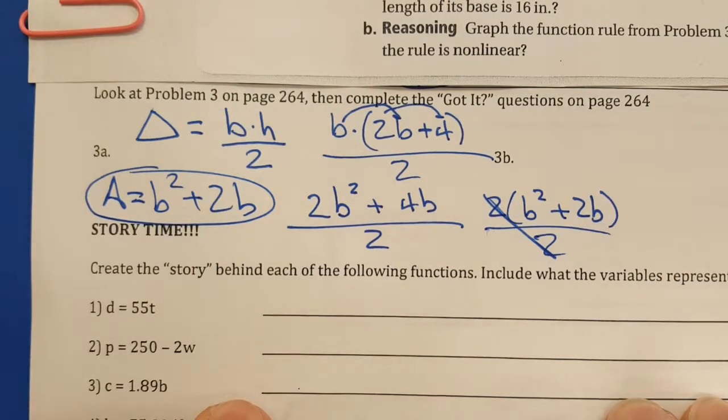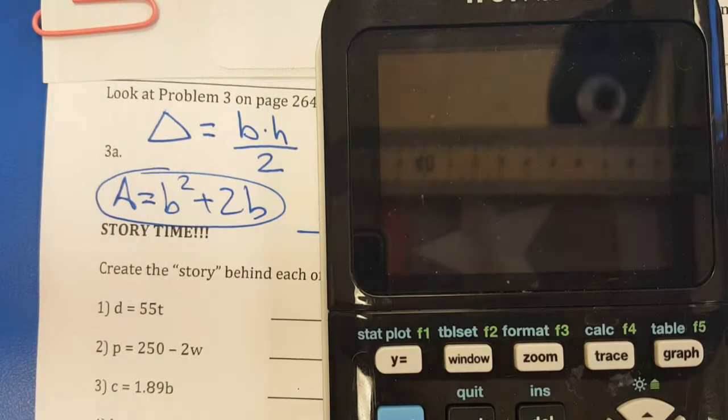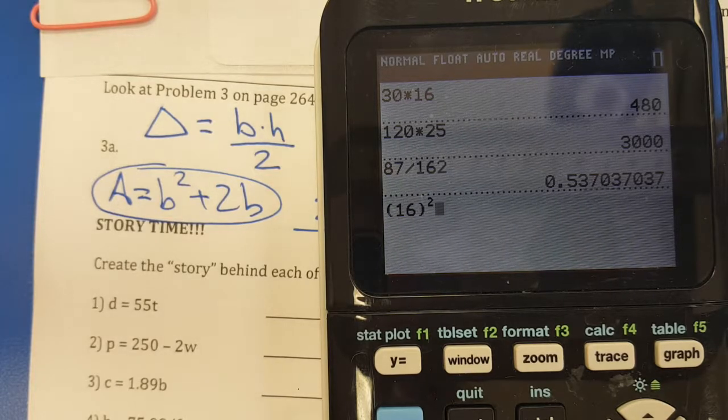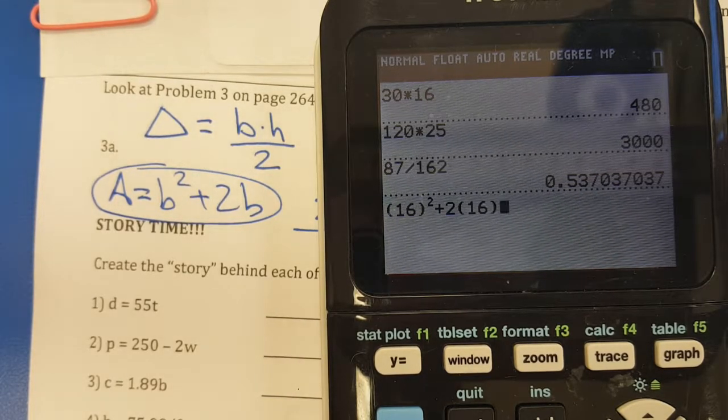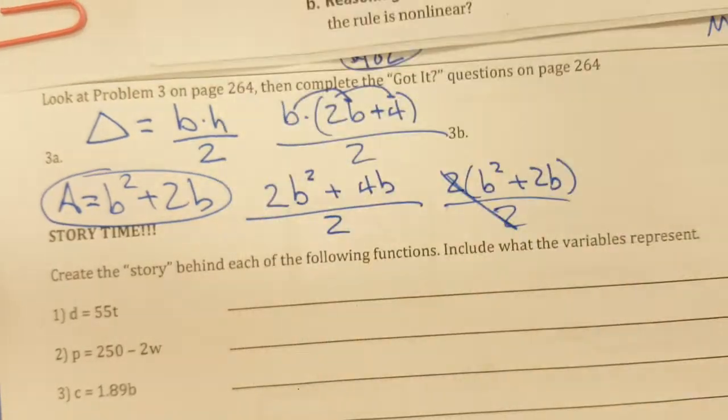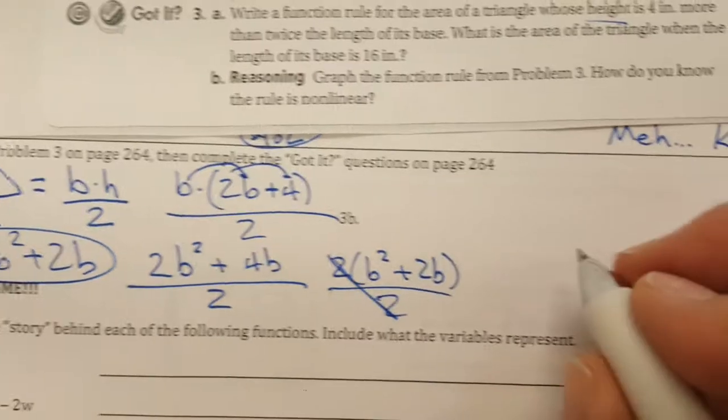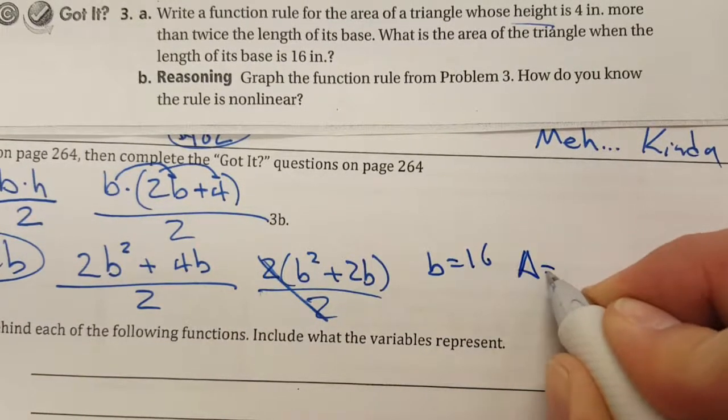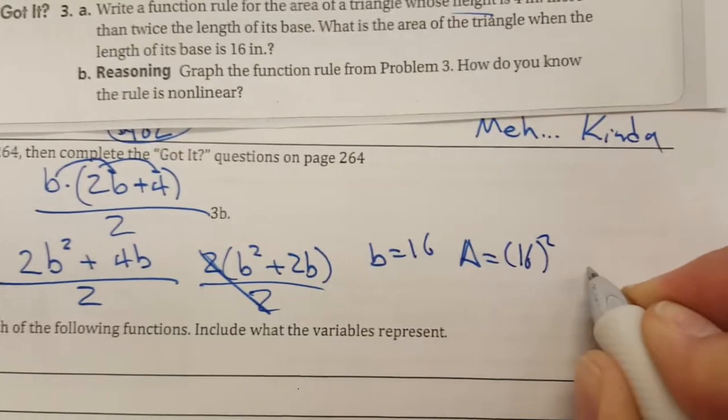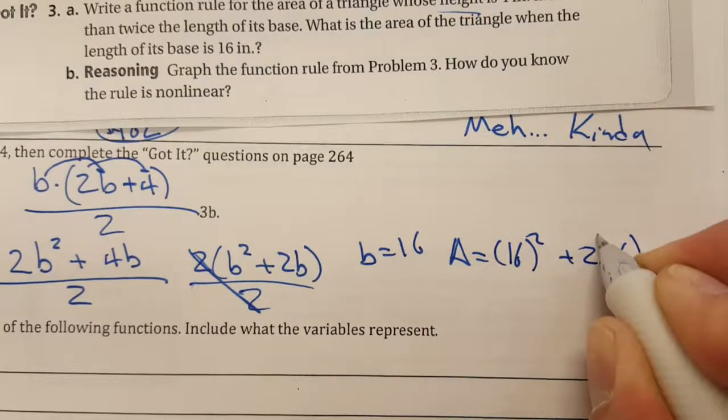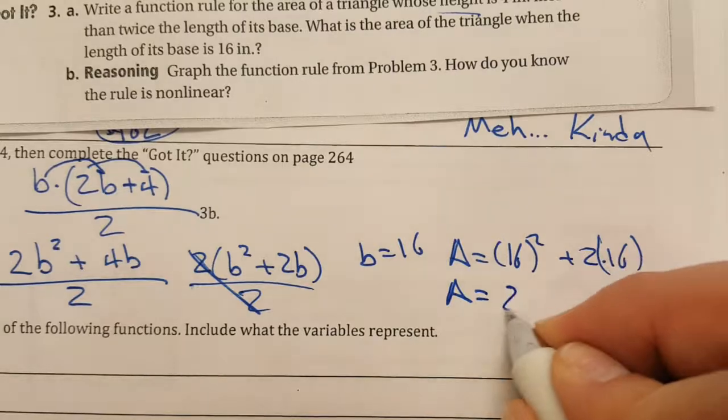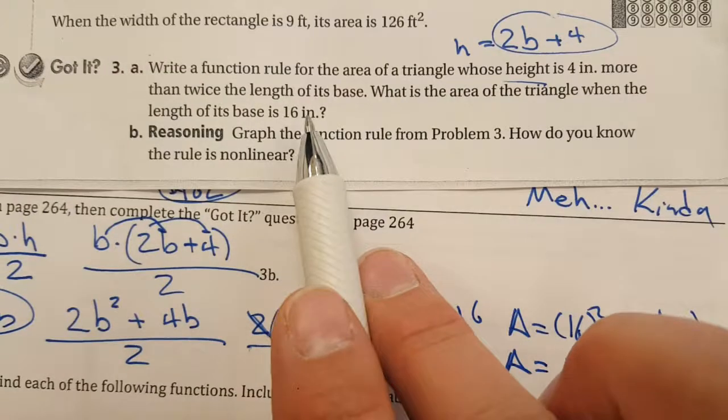Then it says, 'Oh, by the way, what happens when the base is 16?' Well, throw a 16 in there. So here we go. Mr. Calculator, tell me what a 16 squared plus 2 times 16 looks like. It's going to be 288. Okay, so kind of ran out of room here. So when B equals 16, my area is going to be 16 squared plus 2 times 16. I like to use brackets when I plug stuff in. The area is going to be—what was it again?—288. Labeling is important: it'll be inches squared.